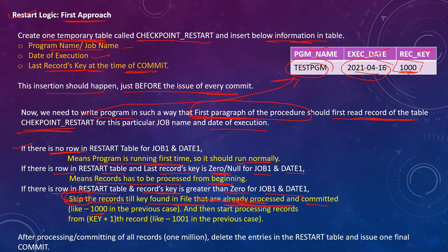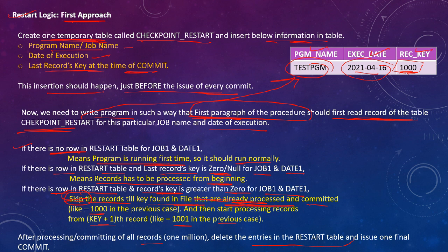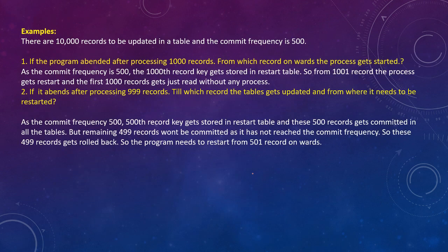For example, if we committed 1000 records, processing starts from the 1001st record — the key plus one. After processing and committing all records, delete the entry in the restart table and issue one final commit, so that for the next day's run it will start from a fresh execution.